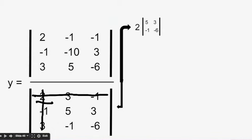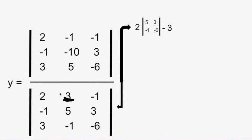So you have 5, 3, -1, and -6. That's how you get the first term of your higher order determinant. And then you have a minus 3.